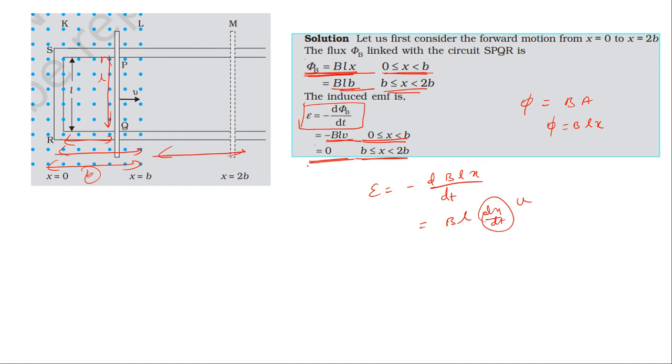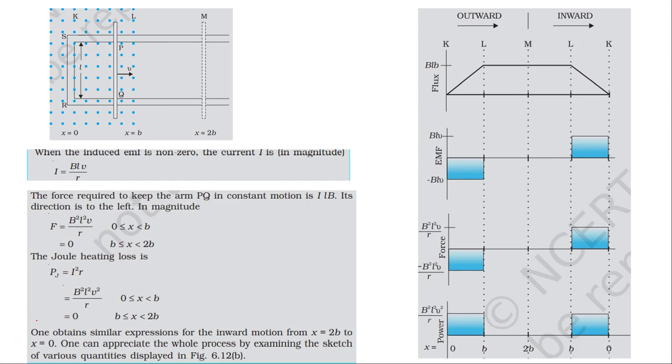Current equals EMF divided by resistance r. Force equals B squared L squared v divided by r. From 0 to b, current and force are non-zero. From b to 2b, they are zero. Power equals B squared L squared v squared divided by r from 0 to b, and zero from b to 2b.